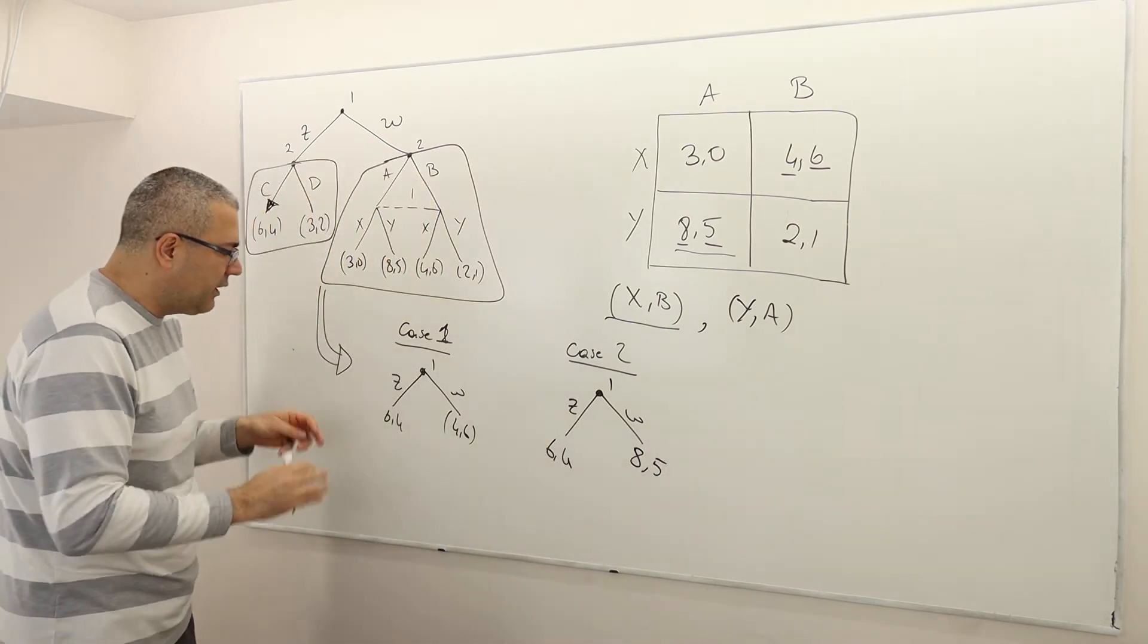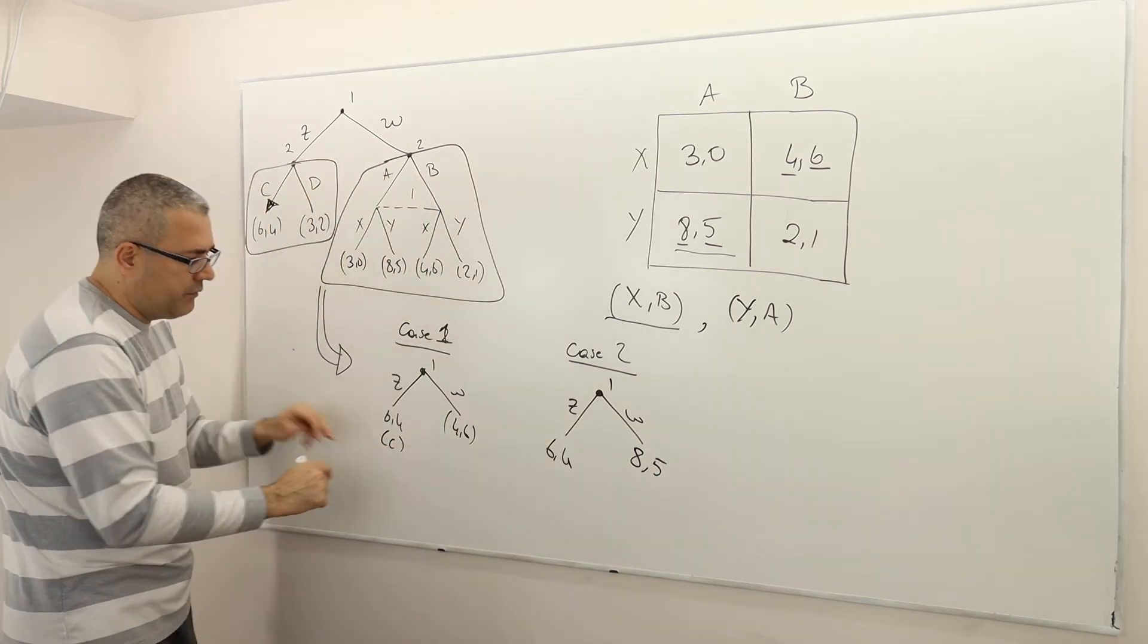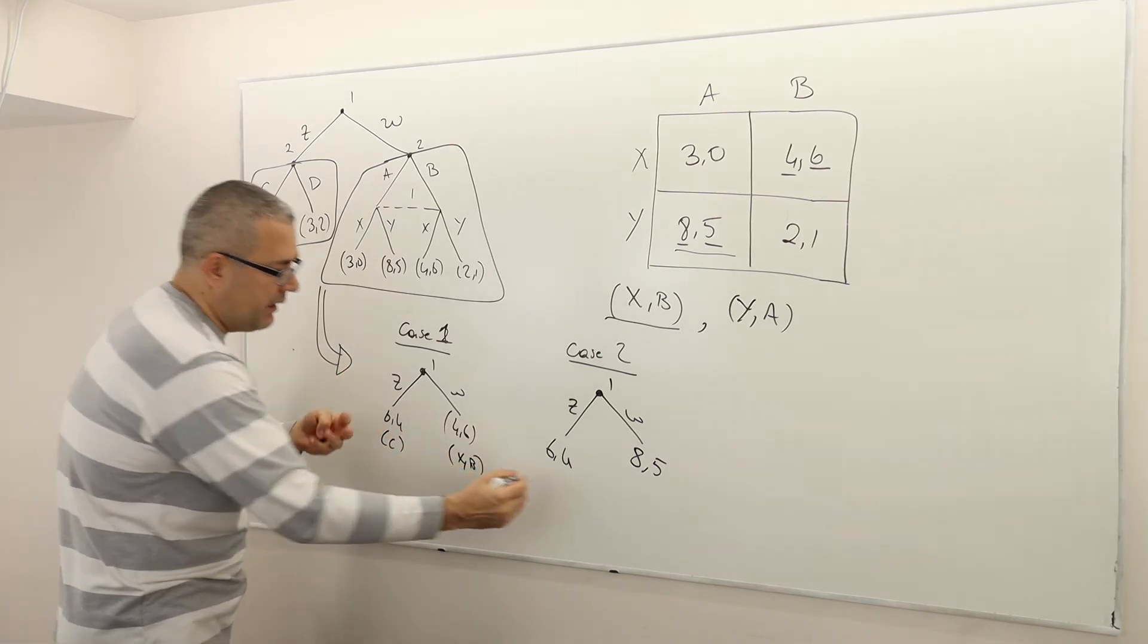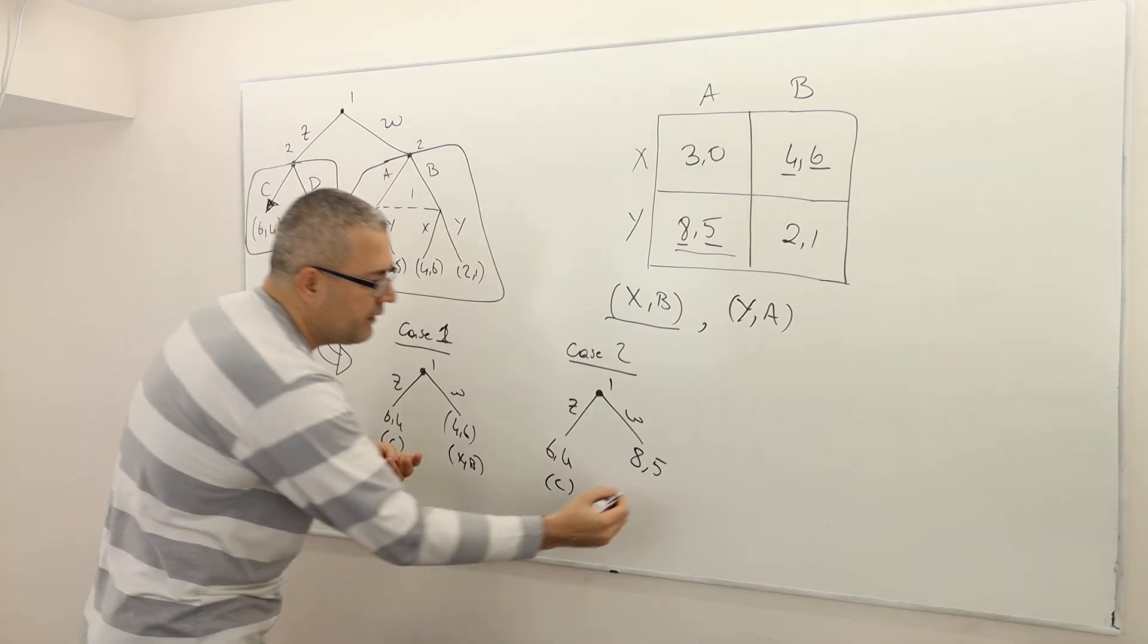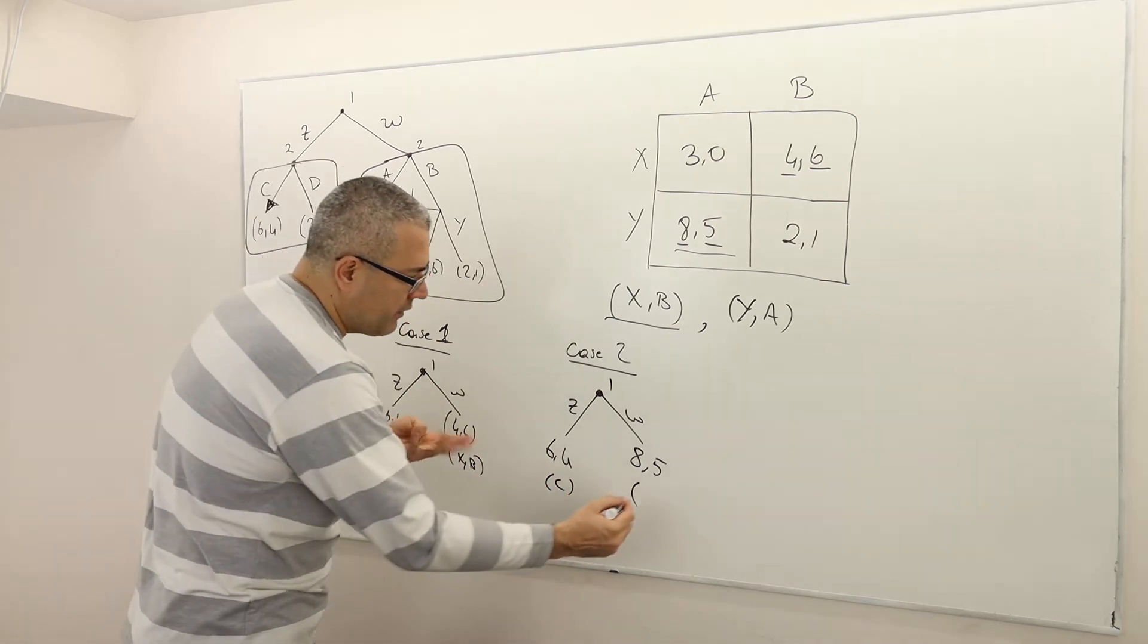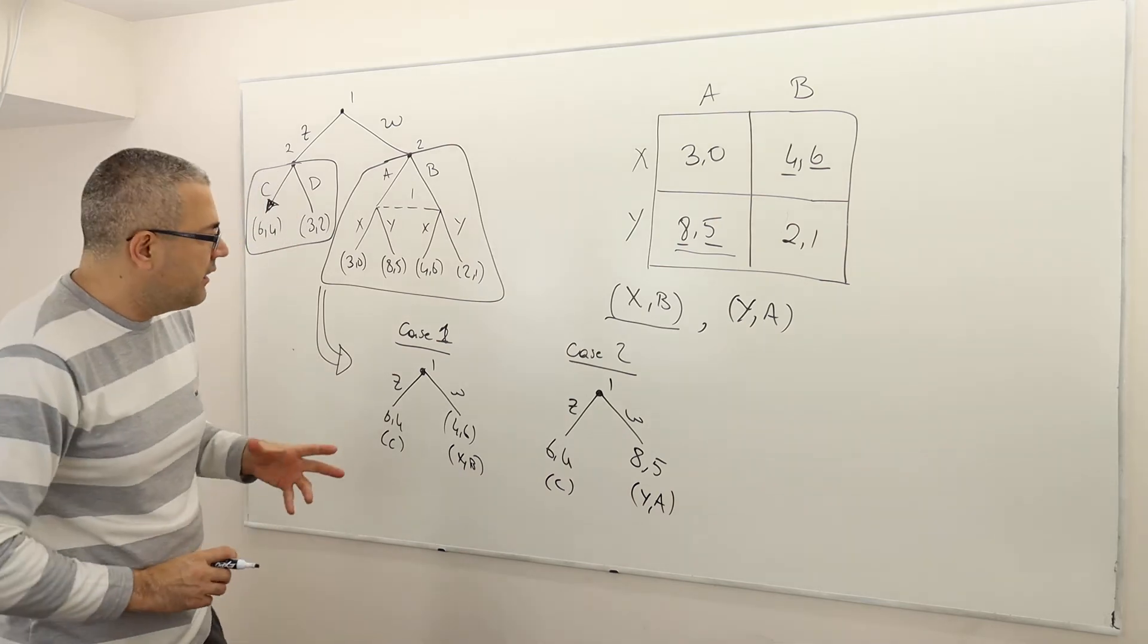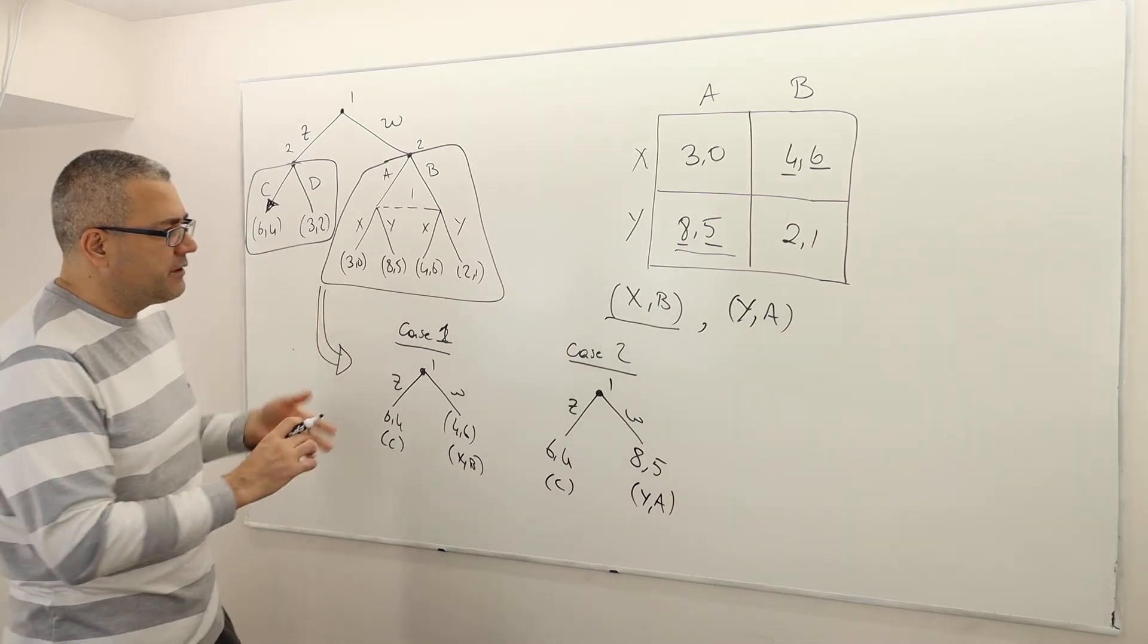Alright? So once again, if you like, you can put the names. Because player 2 is going to play C. And here, because the players are going to play X,B. And here, again, player 2 is going to play C. And the strategies are going to be Y,A.